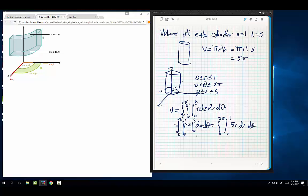Here we go. So antiderivative, I work inside out. This is going to be rz, integral from 0 to 2 pi, integral from 0 to 1 of rz from 0 to 5, and then dr d theta. Which is equal to the integral from 0 to 2 pi, integral from 0 to 1 of 5r dr d theta.